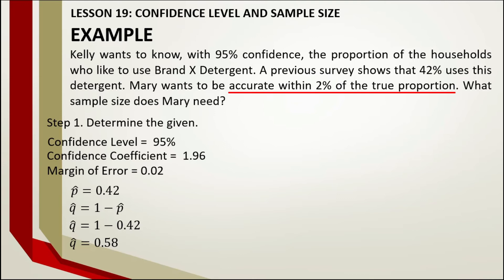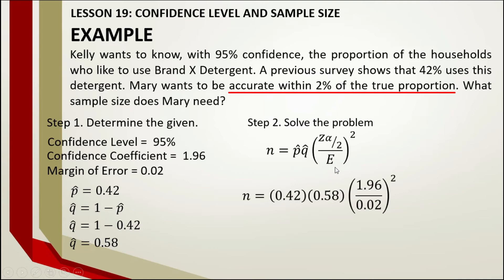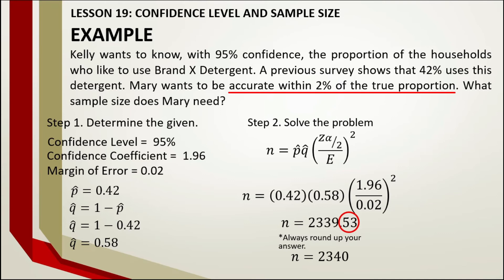With P-hat, Q-hat, confidence coefficient, and margin of error all identified, we can compute the sample size. Note: first square the quantity (confidence coefficient divided by margin of error), then multiply by P-hat times Q-hat. The computed answer is 2,339.52. Rounding up, the final answer is 2,340.